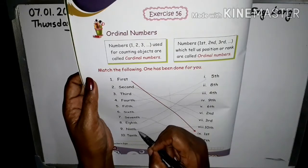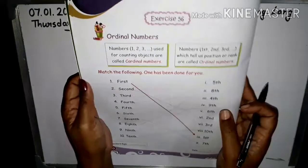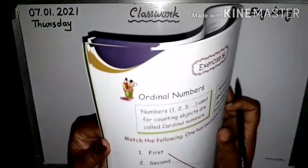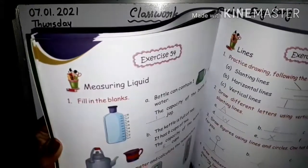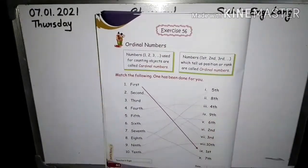Okay, so pages 59 and 60 — practice these ordinal numbers up to tenth.